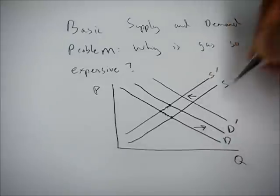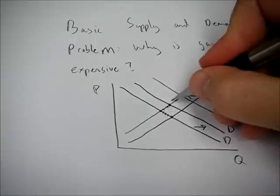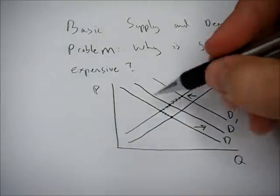So that would be another rightward shift in demand, possibly because of higher incomes in developing countries. They can purchase more oil, or you could argue that these countries never purchased oil before, so now there are more buyers in the market. Again, this will result in an increase in price.